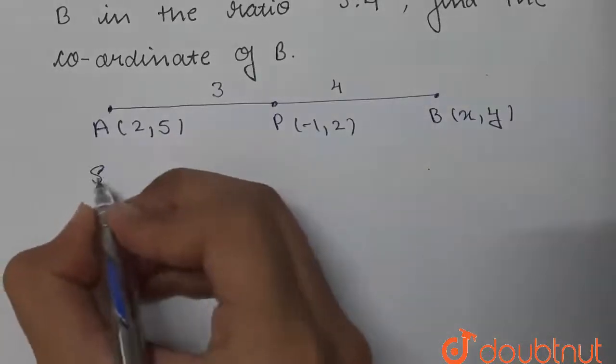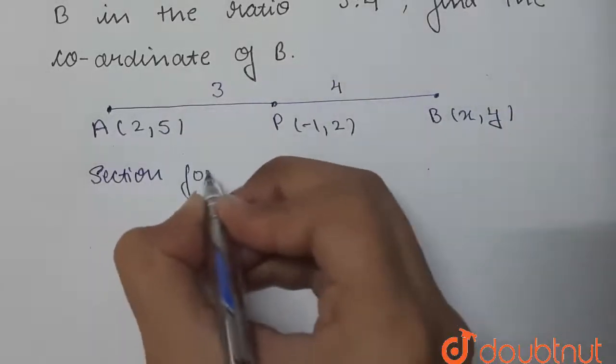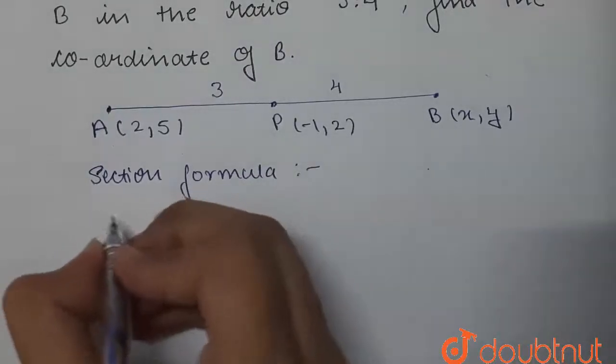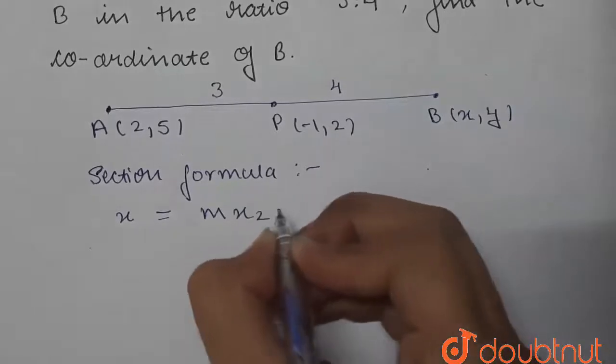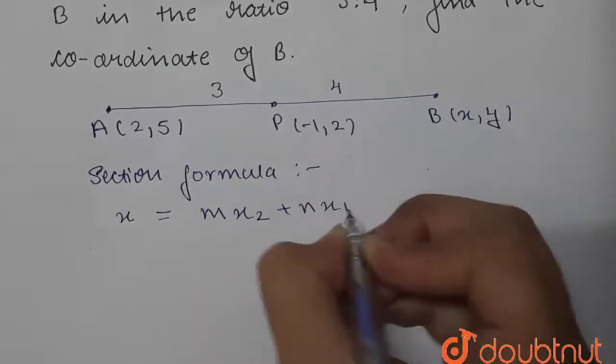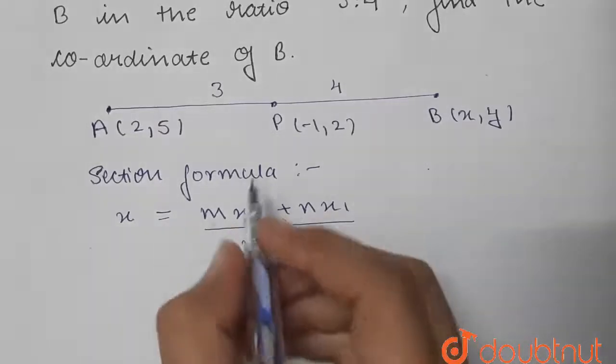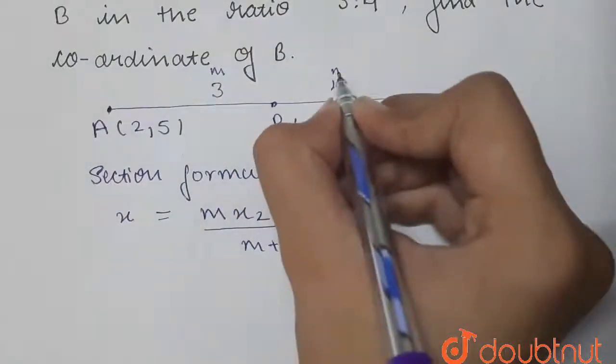By section formula, the x-coordinate is found by: x = (m·x₂ + n·x₁)/(m + n), where m is 3 and n is 4.